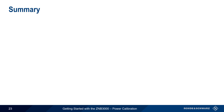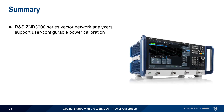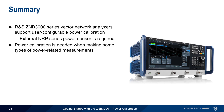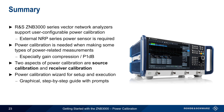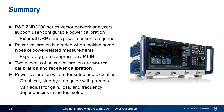In summary, Rohde & Schwarz ZNB3000 Series Vector Network Analyzers support user-configurable power calibration, typically performed using an attached NRP Series power sensor. Power calibration is needed when making power-related measurements, particularly when measuring gain compression or P1dB. The ZNB3000 supports both source calibration and receiver calibration. The power calibration wizard makes it easy to set up, configure, and run power calibration with a graphical step-by-step guide. Power calibration configuration can also be adjusted for any gain, loss, and frequency-dependent behavior in the test setup.